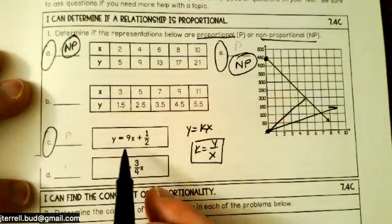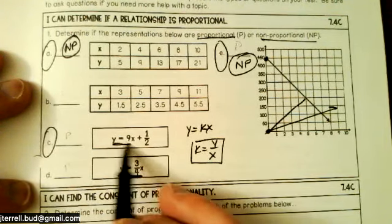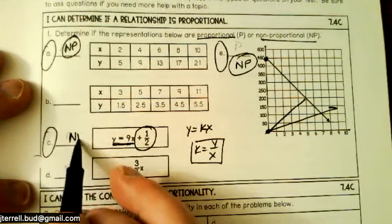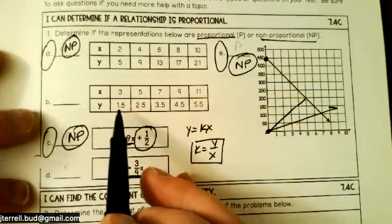Okay, and the same thing here. This is proportional. If it was just this, this would be proportional because I have a y-intercept here and this is non-proportional. Okay, so you've got to watch. It's got to be here.